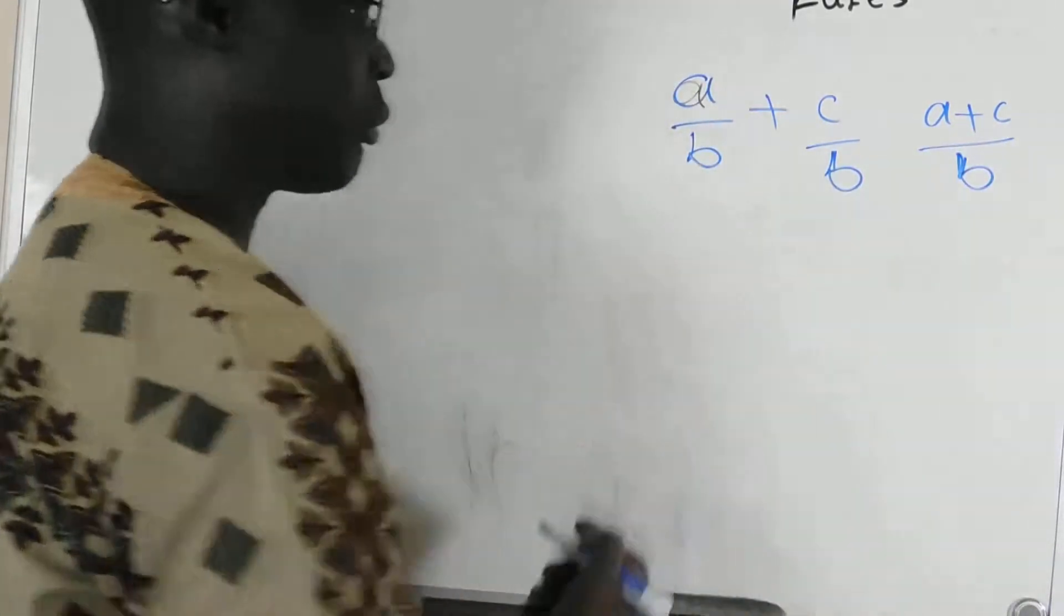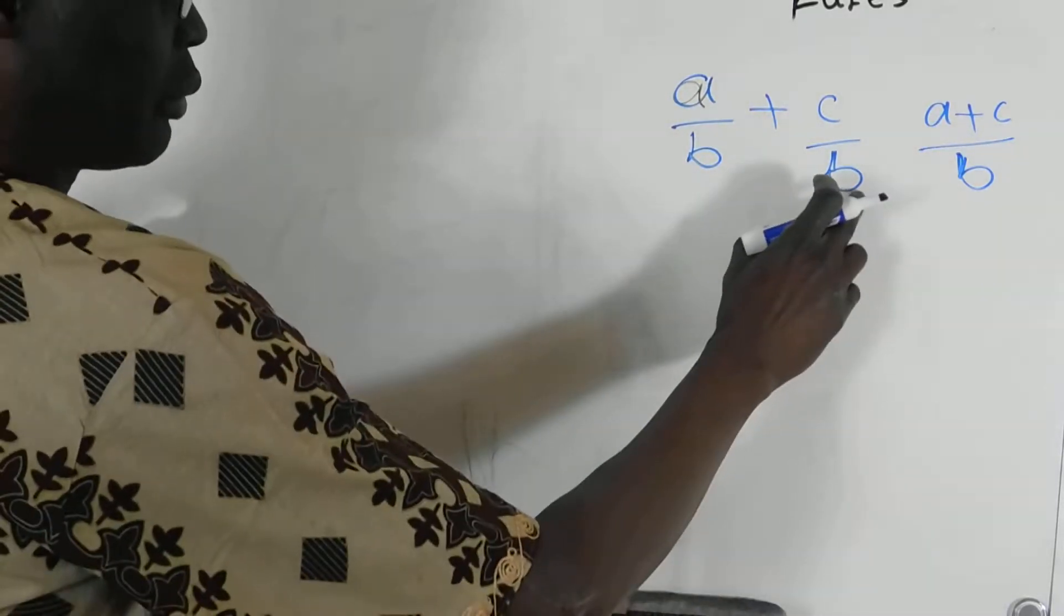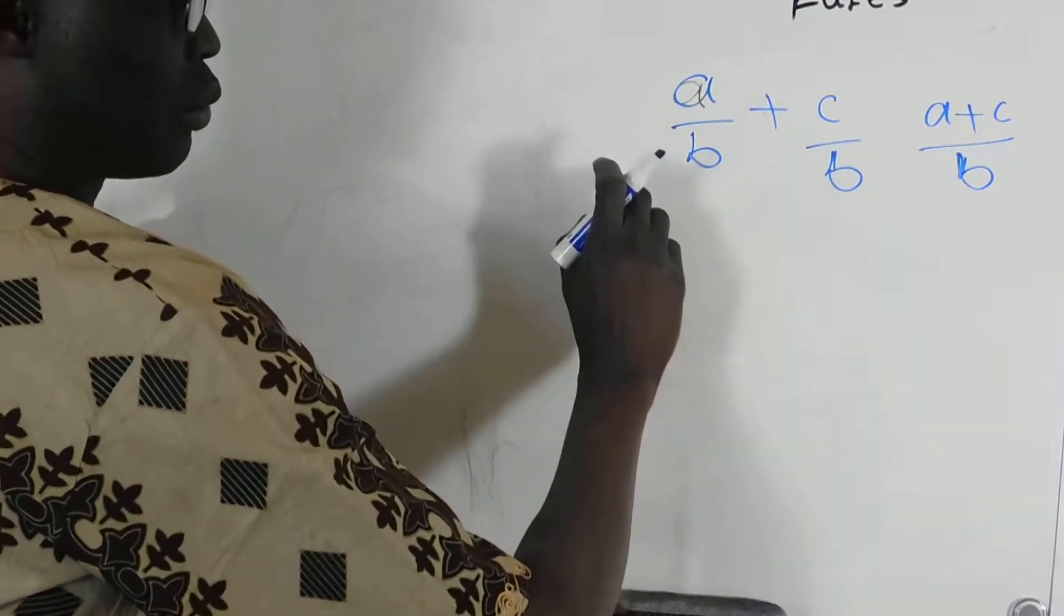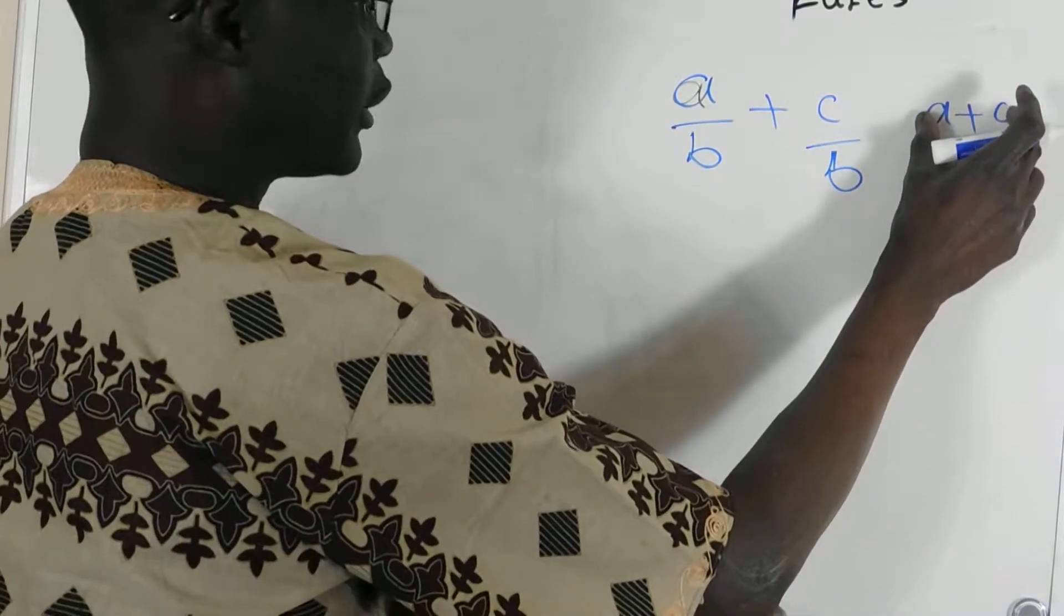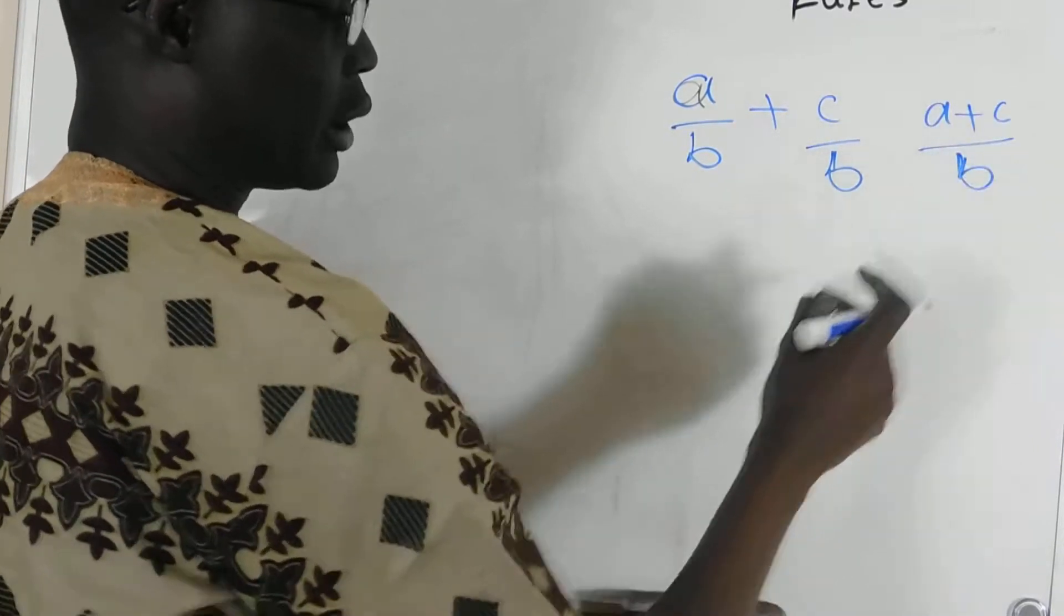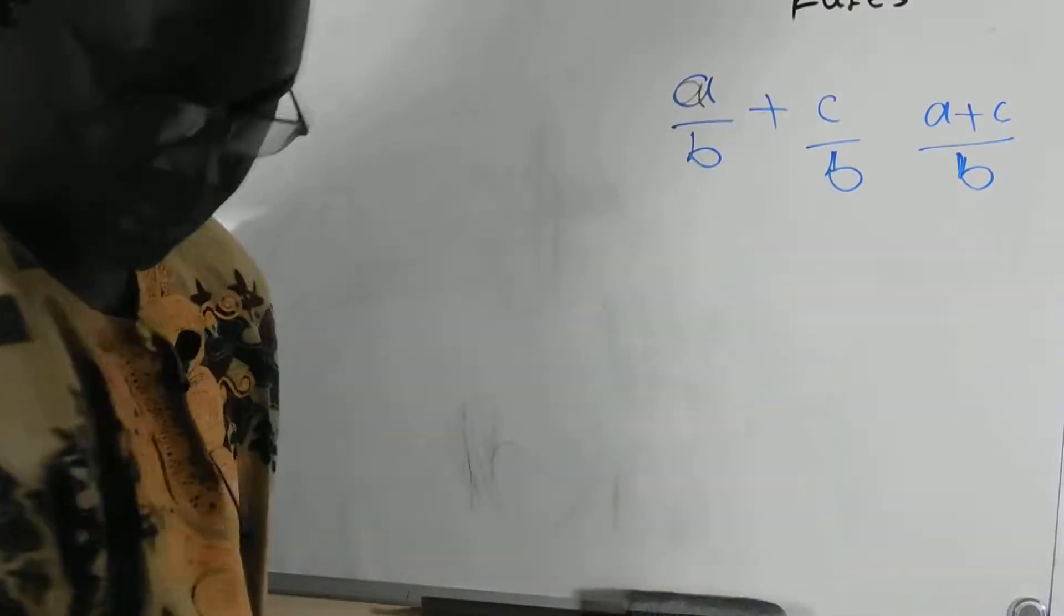Because the B will be the same number, it can be 2, or 1, or 3. If you have the same, the number here, what you do, you add the two numbers, A and C, and then on the bottom, you leave it, it don't change. Okay, so, we are going to see one example on that one.